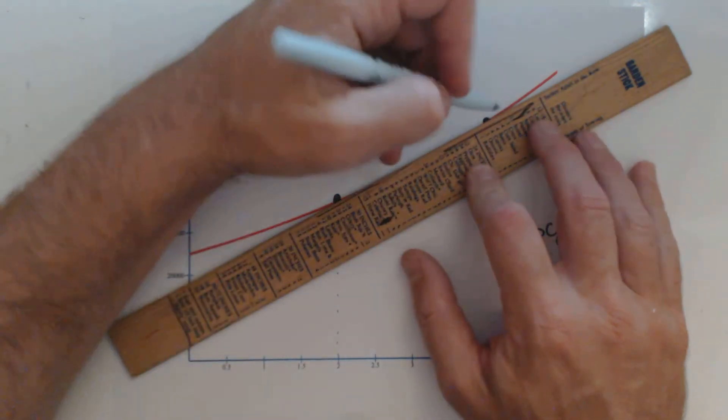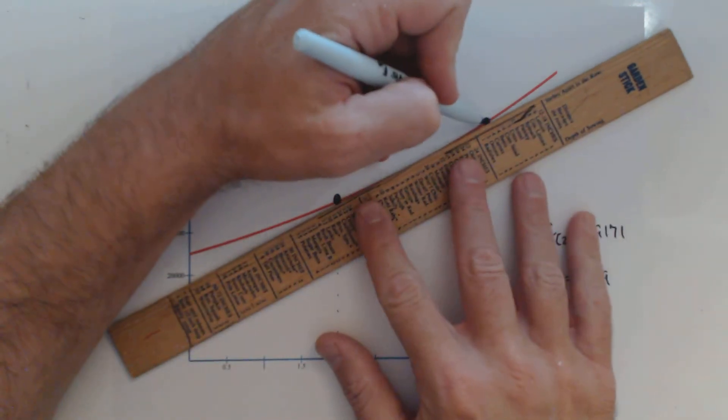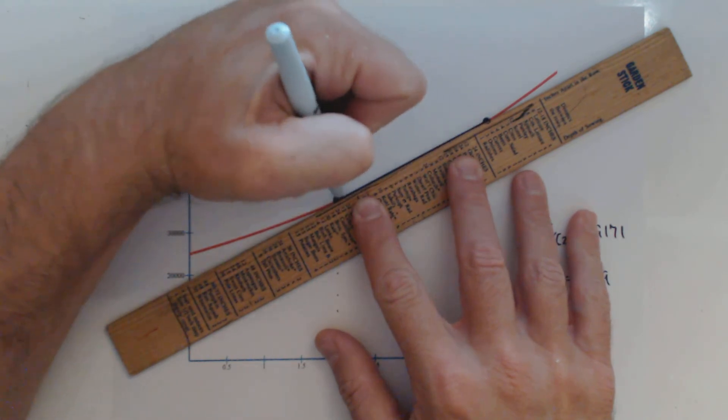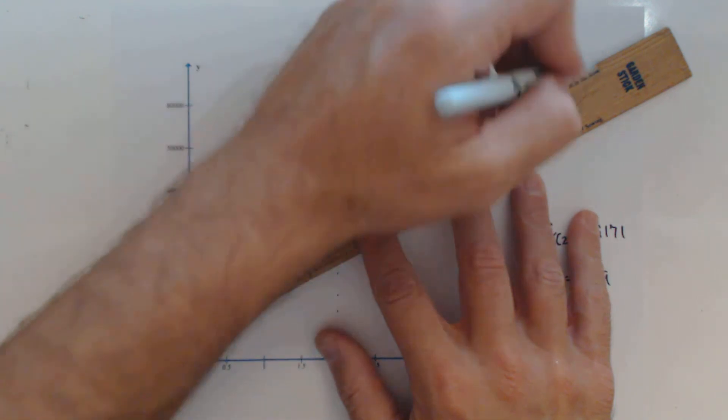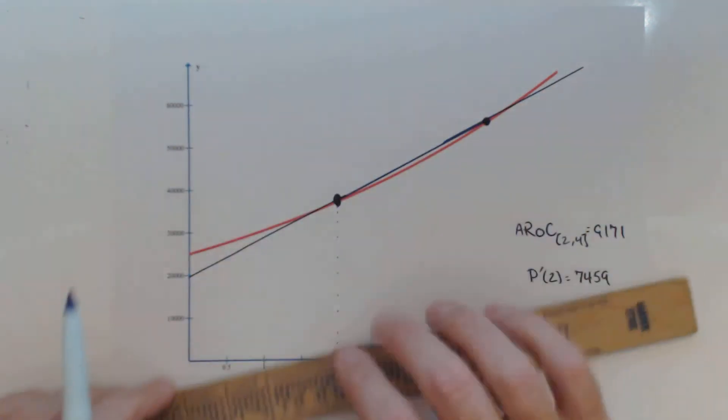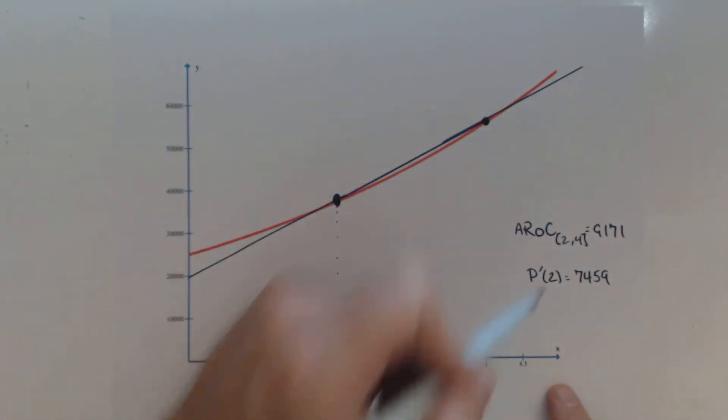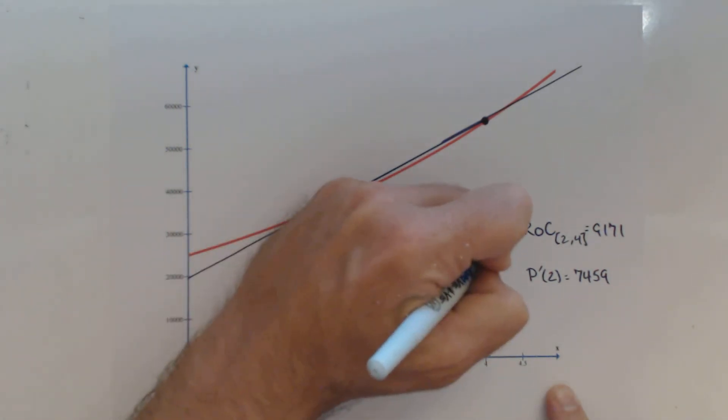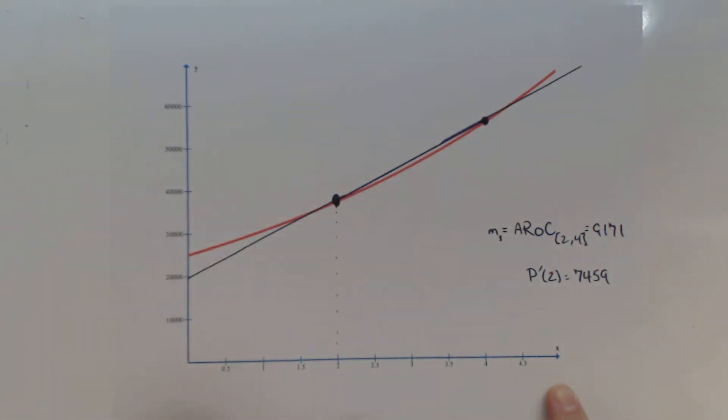Okay, so when we go to draw our average rate of change, we're going to connect those two points with a secant line. Now our secant line goes on, and if we want to draw it, we can. Right there's the secant line whose slope is our average rate of change. So that's the slope of our secant line.